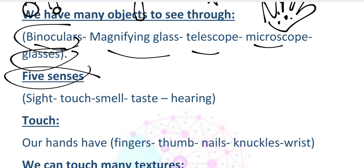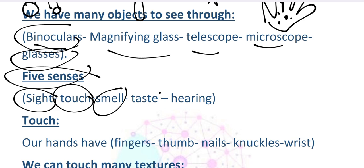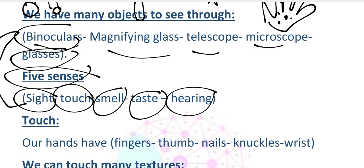Now let's talk about the five senses: sight to see, touch to feel everything around us, smell, taste, and hearing. We already talked about sight, so now we will talk about touch.